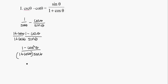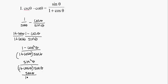1 minus cosine squared theta is sine squared theta, all over (1 plus cosine theta) times sine theta. I have sine squared over sine, so one of those sines cancels out. I'm just left with sine theta over (1 plus cosine theta), which equals the right-hand side: sine theta over (1 plus cosine theta).